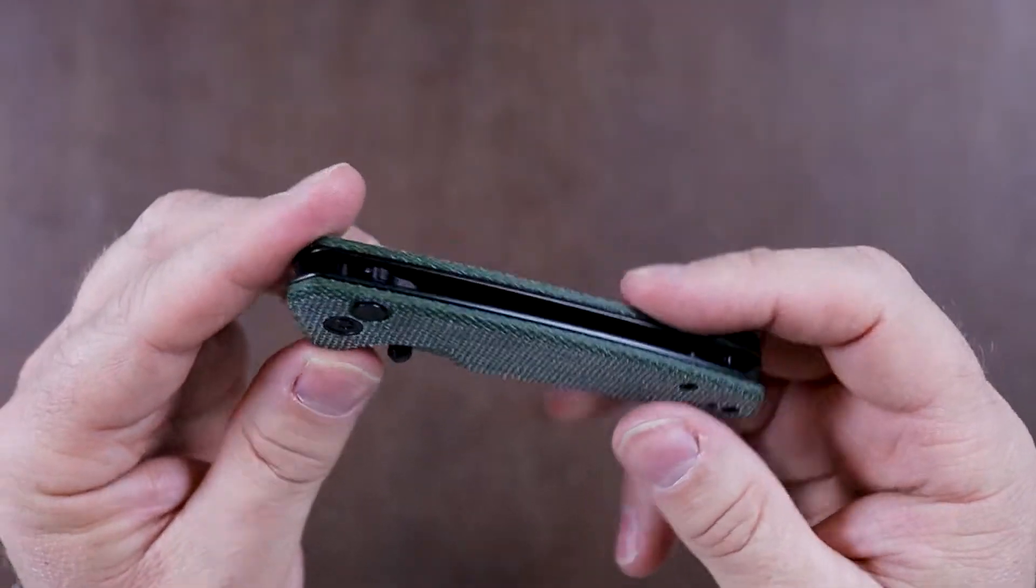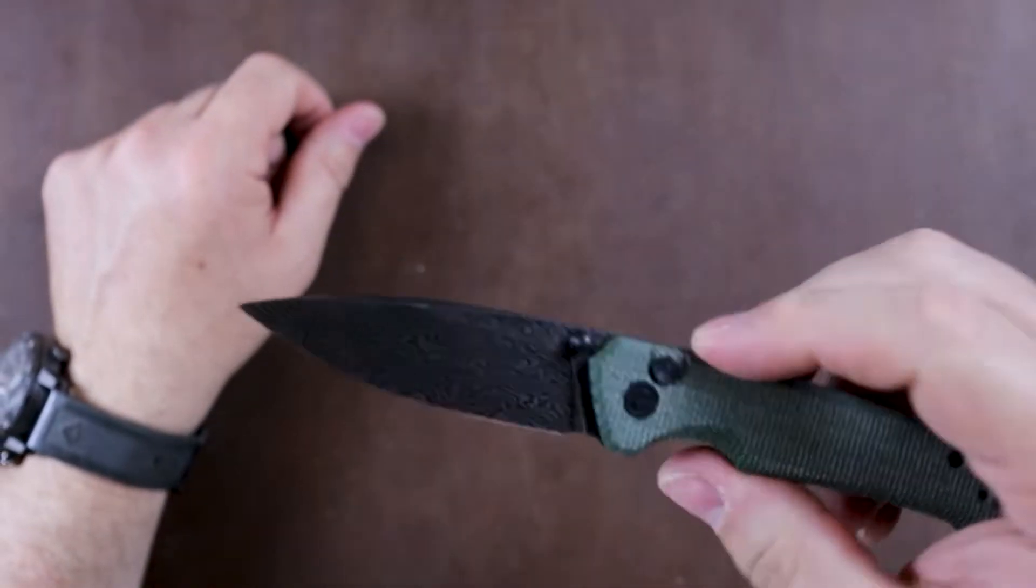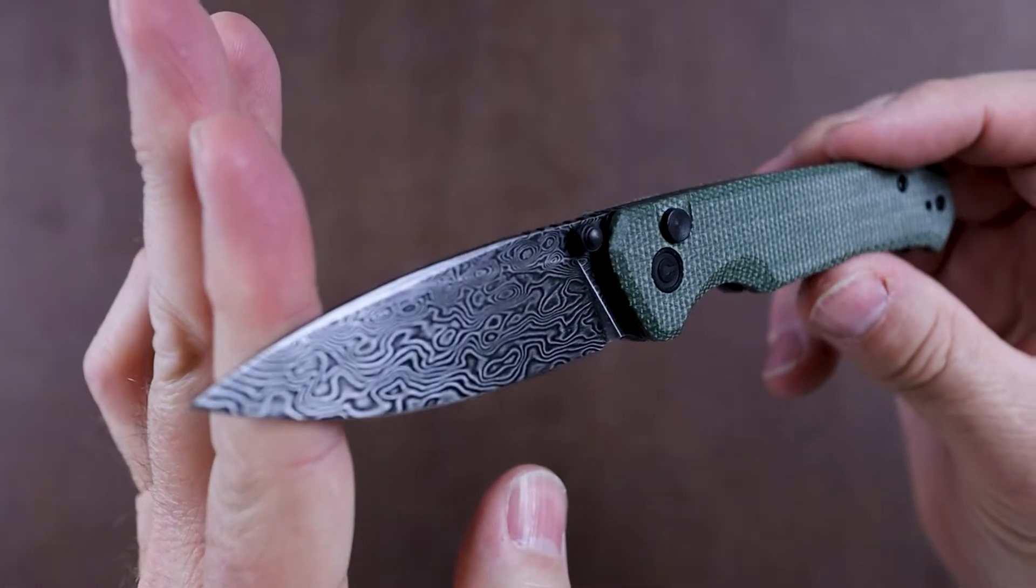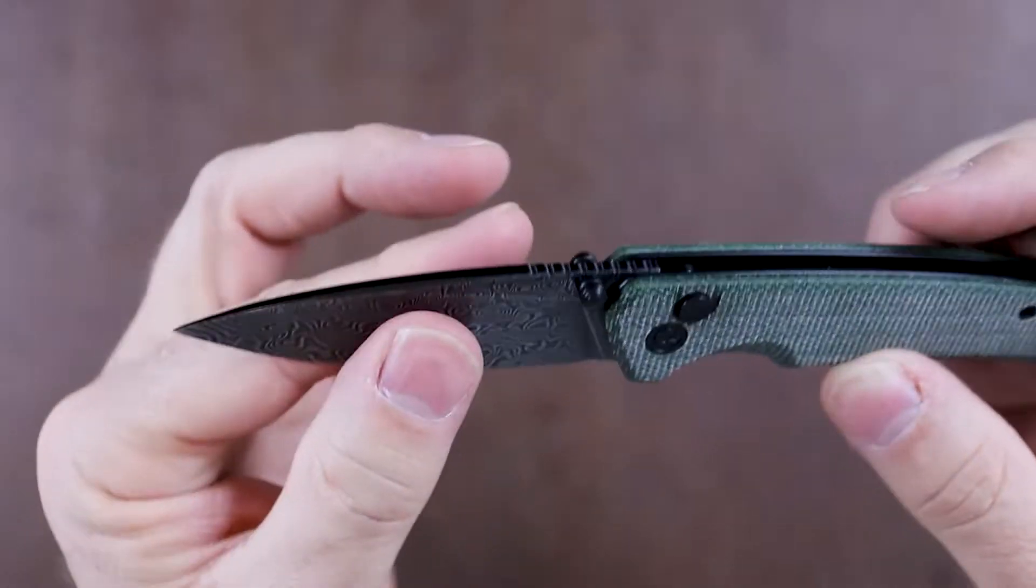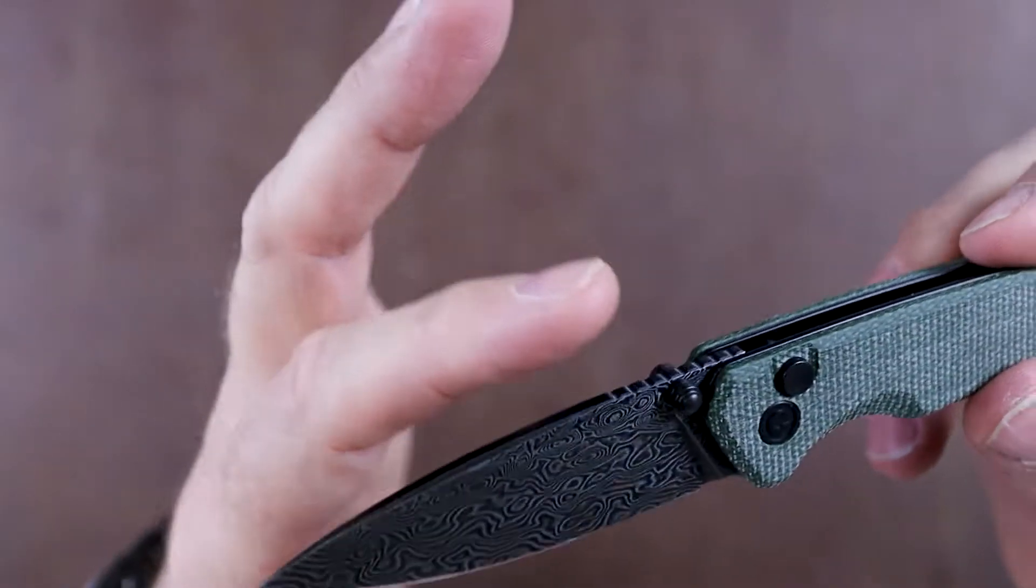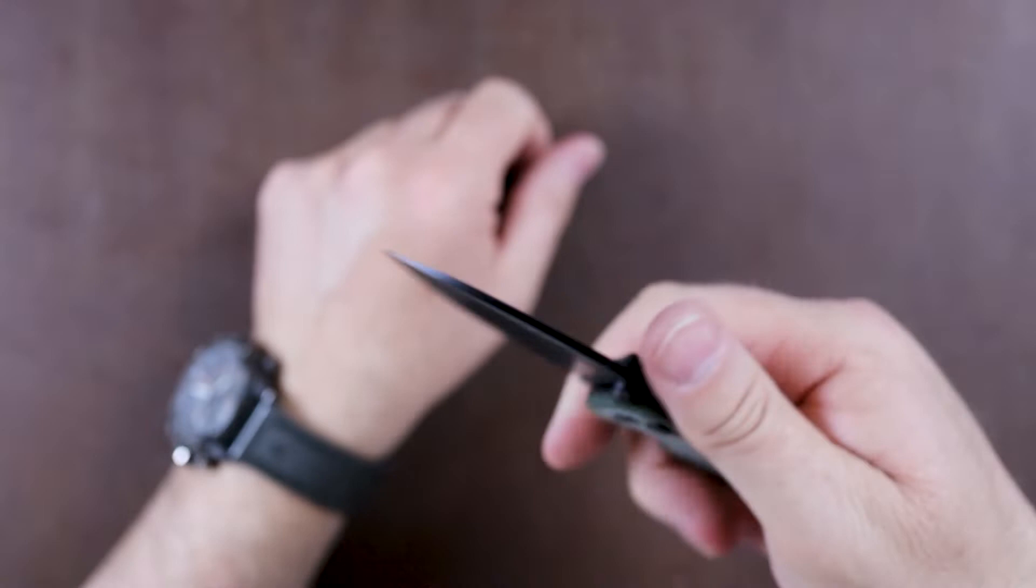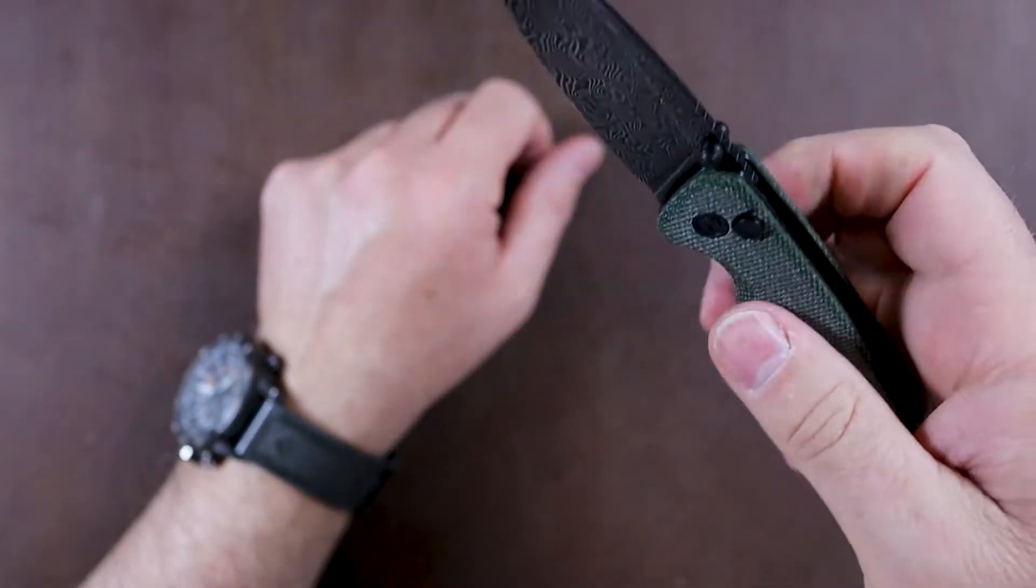This is a button lock knife. It's got a black hand-rubbed Damascus blade on that. It's a flat ground blade. It kind of has that leaf type shape. So it's got a neat looking blade on it.